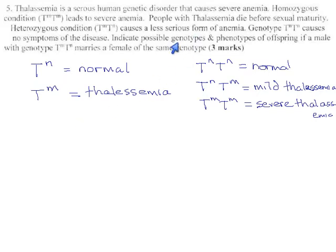So, indicate genotypes and phenotypes if a male who is T^M T^N. I put the N first. They're putting the M first. I'll just go along with what they did.